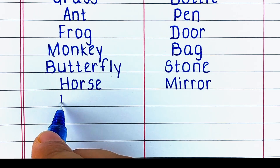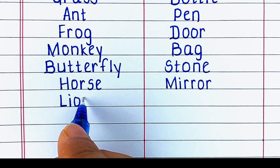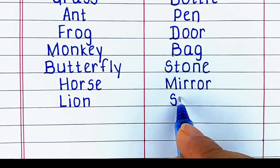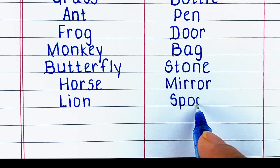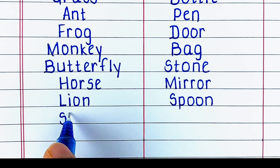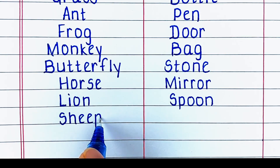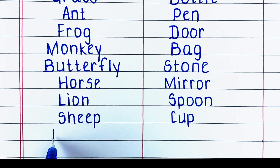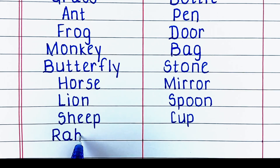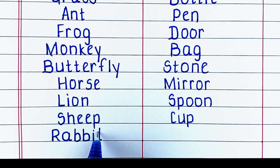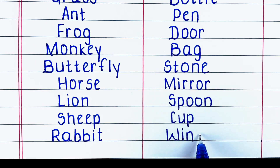Next living thing is horse. Next non-living thing is mirror. Next living thing is lion. Next non-living thing is spoon. Next living thing is ship. Next non-living thing is cup. Next living thing is rabbit. Next non-living thing is window.